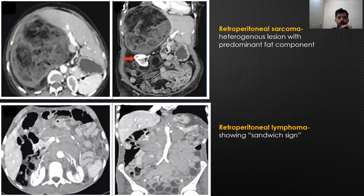Another case showed a well-defined large solid lesion with a predominant fat component, noted displacing the liver anteromedially and the right kidney inferiorly. Tissue diagnosis proved that it is a case of retroperitoneal liposarcoma.